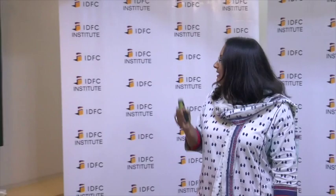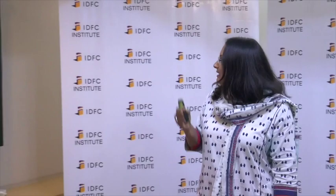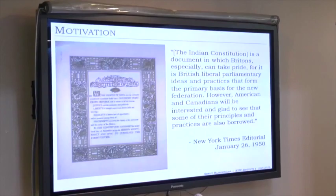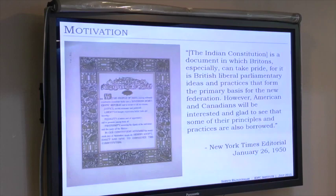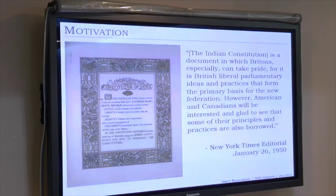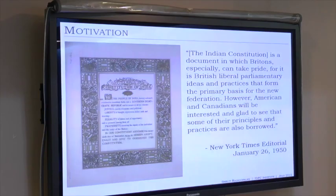When the Constitution was ratified in January 1950, the New York Times editorial said the Indian Constitution is a document that the British can take pride in — a liberal parliamentary democracy. Even Americans and Canadians would be interested that some of their practices are enshrined in it, specifically the Bill of Rights. So it seems to have started out as a really great document. So what happened?